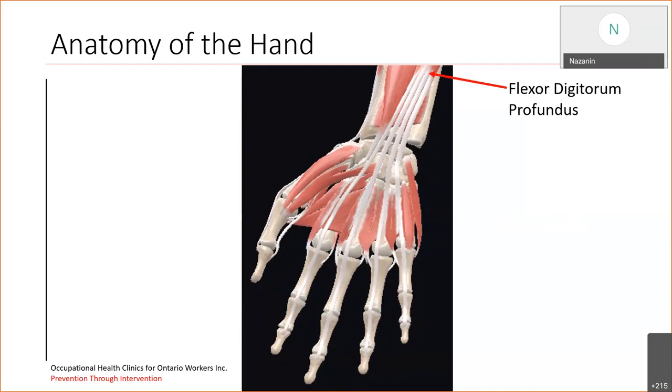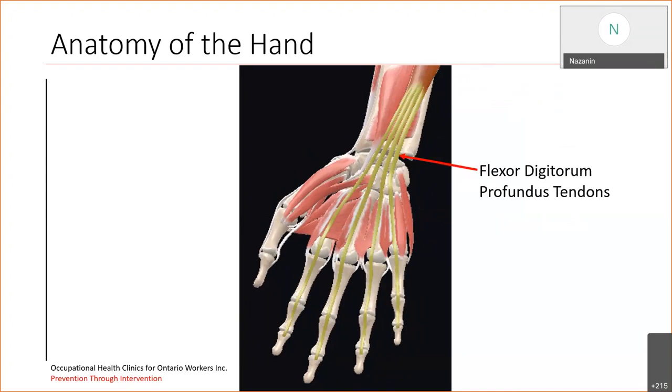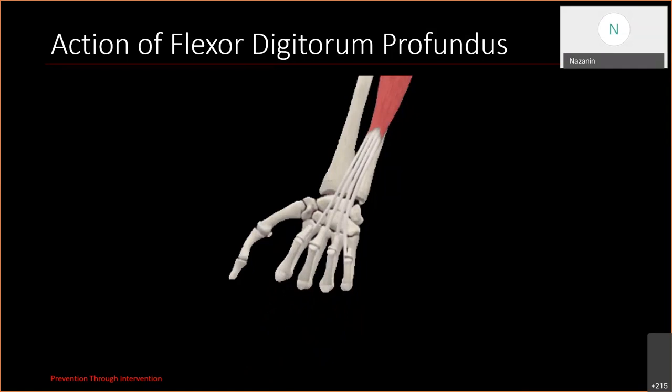In the next slide, we can see that the muscles and the tendons responsible for bending and flexing your fingers include the flexor digitorum profundus muscles and flexor digitorum profundus tendon. This is how they work to bend your fingers and thumb.